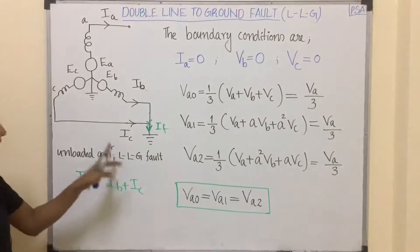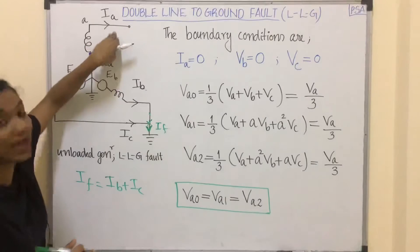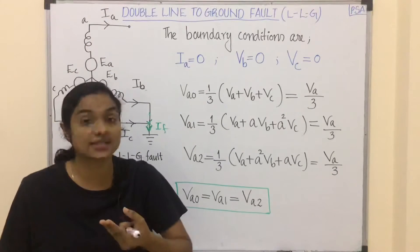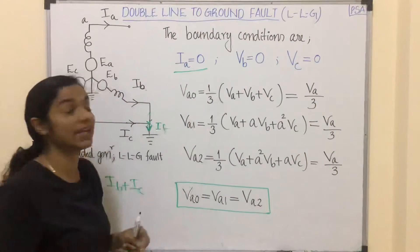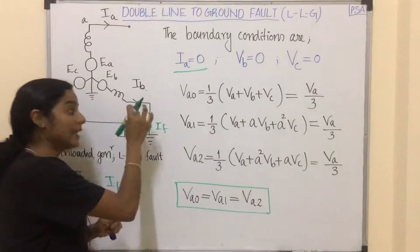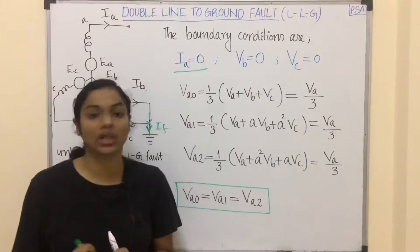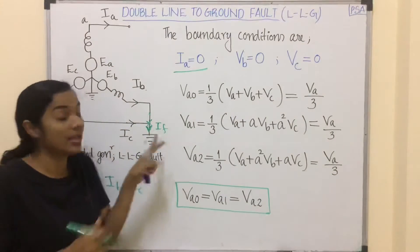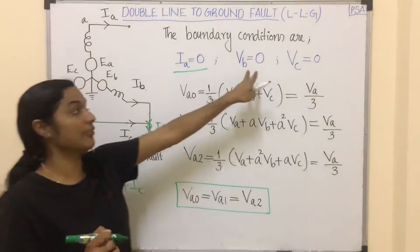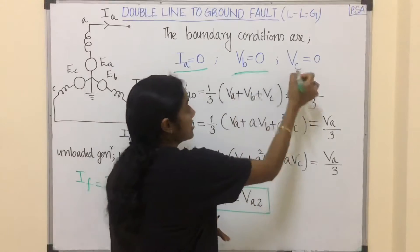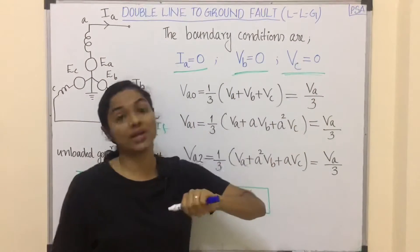Now let's define our boundary conditions. From this figure we can clearly say that the value of IA will be zero — the same scenario as we discussed in LL fault. So the first boundary condition is IA equal to zero. Also, in LL fault we had VB equal to VC but not equal to zero, whereas here VB equal to zero and VC equal to zero because phase B and phase C terminals are grounded.